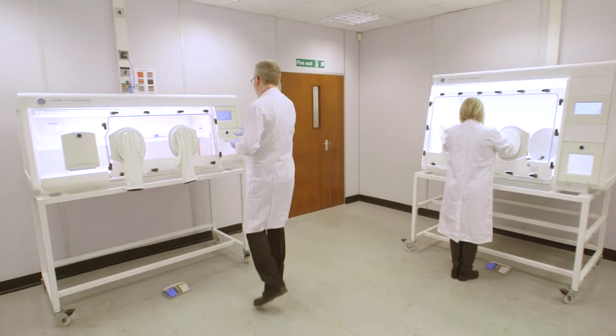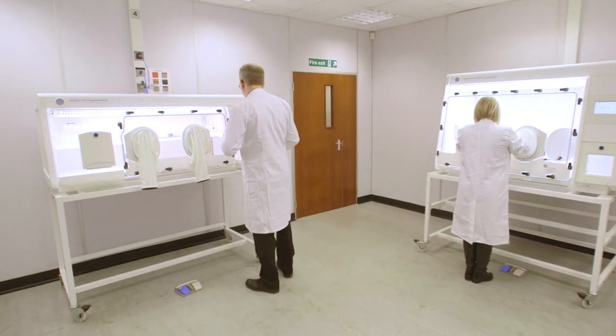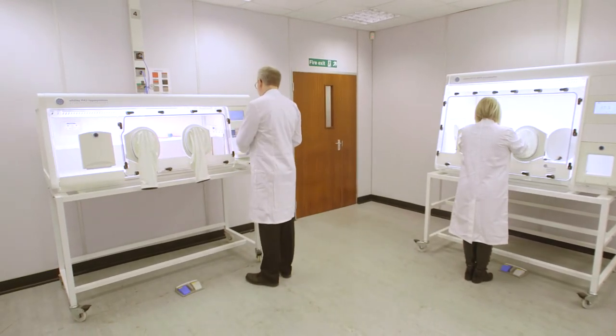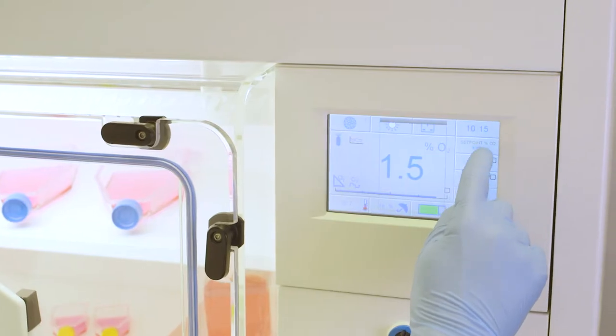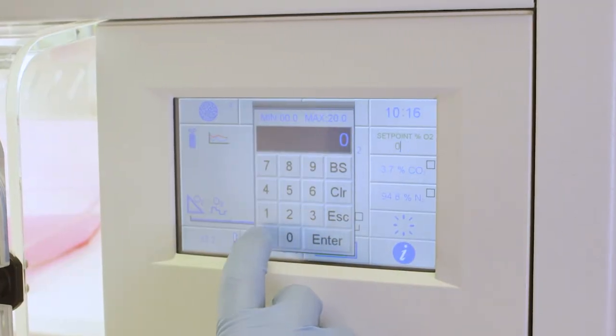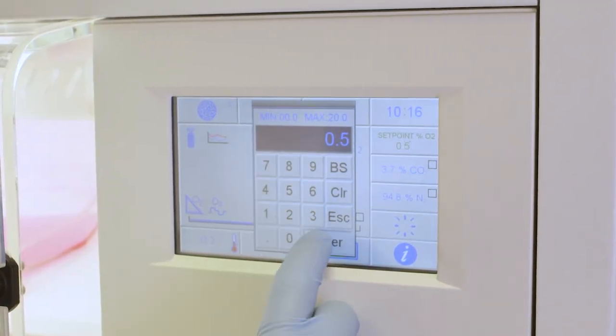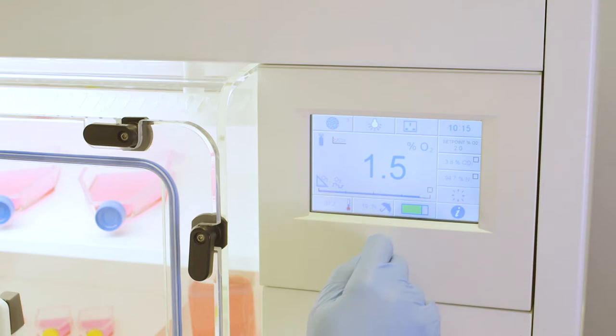Hypoxic stations allow the control of oxygen and carbon dioxide concentration in 0.1% increments. The sophisticated control mechanisms used in hypoxic stations allow the selected gas mixture to be rapidly and accurately attained and adjusted.